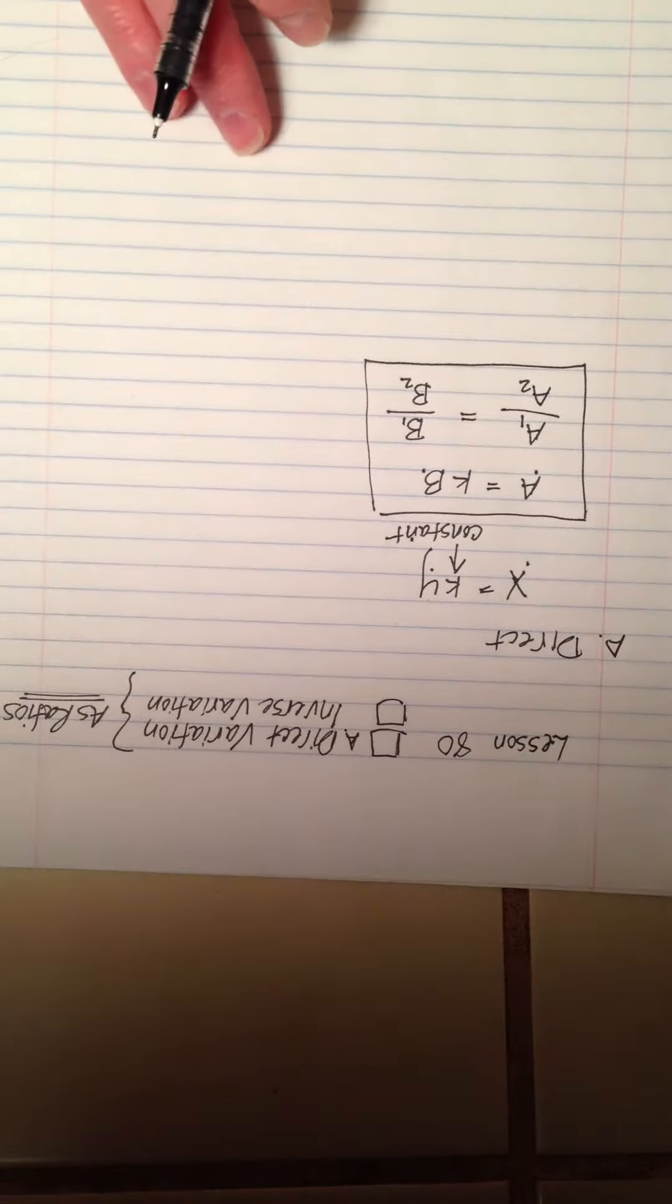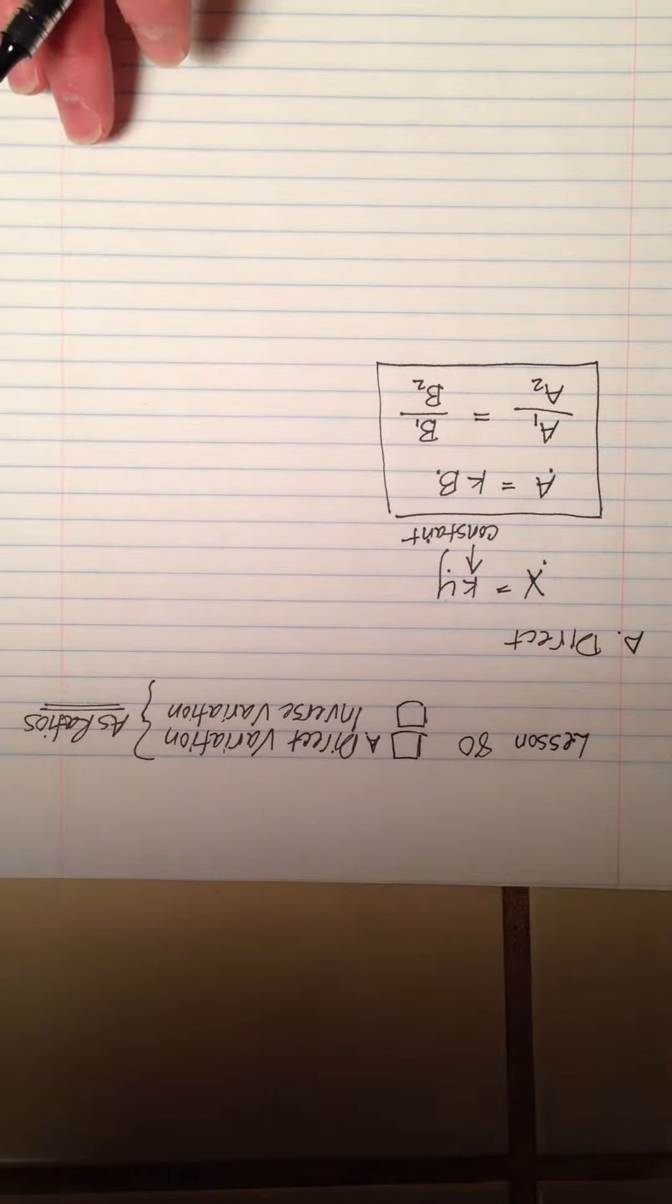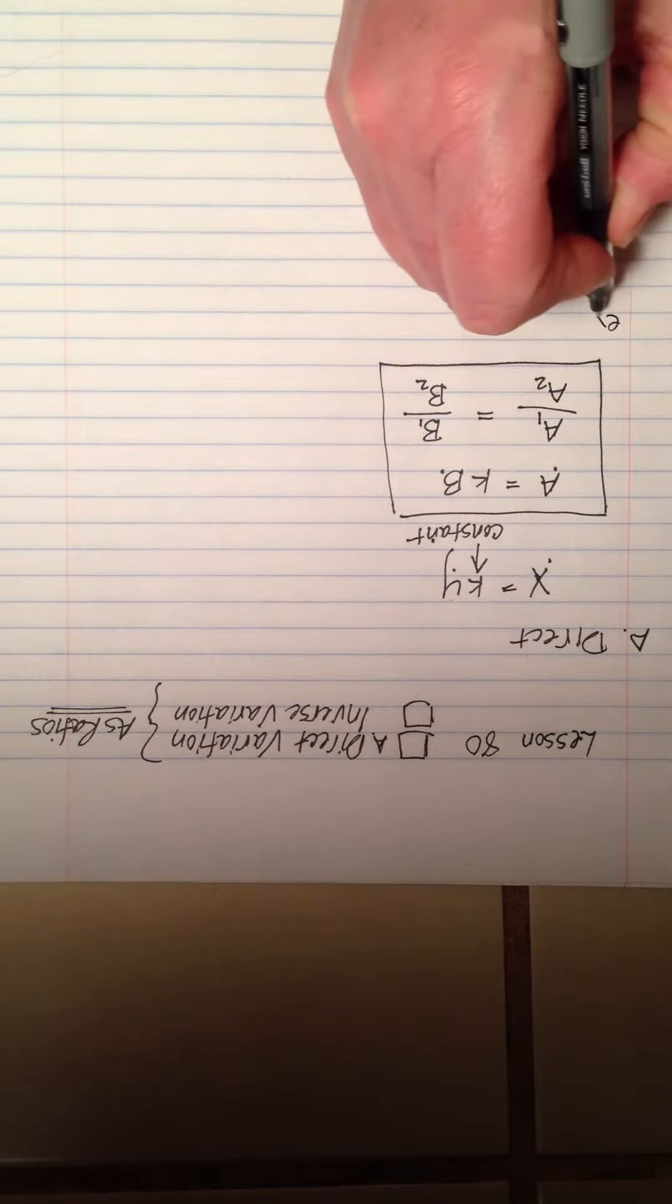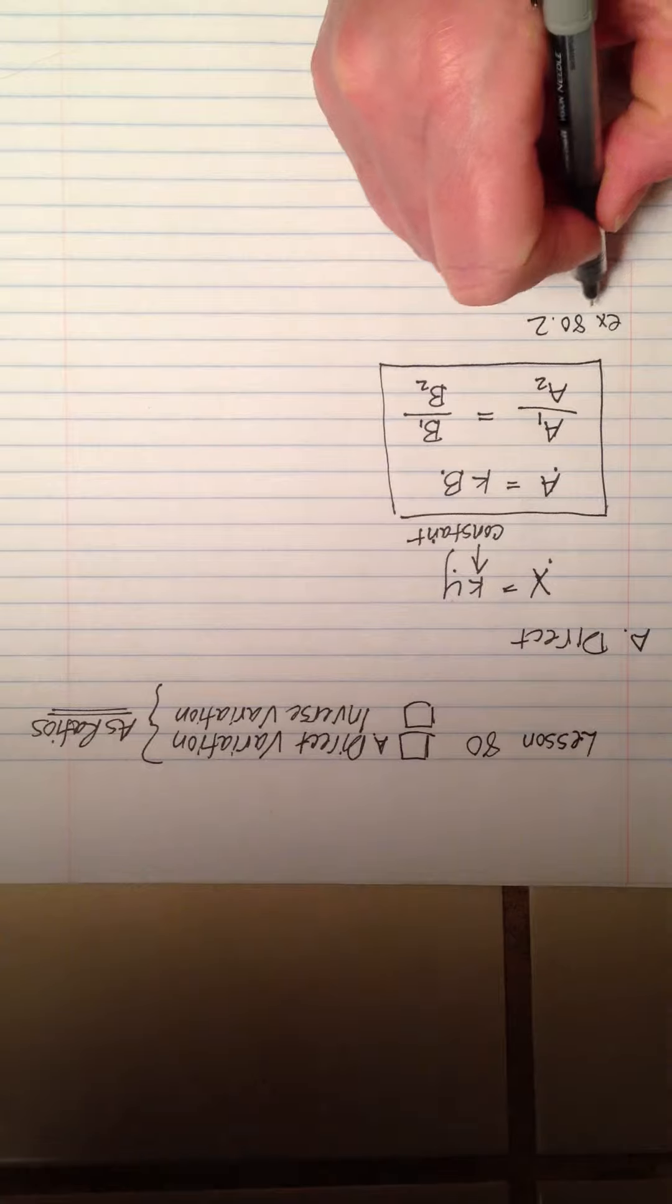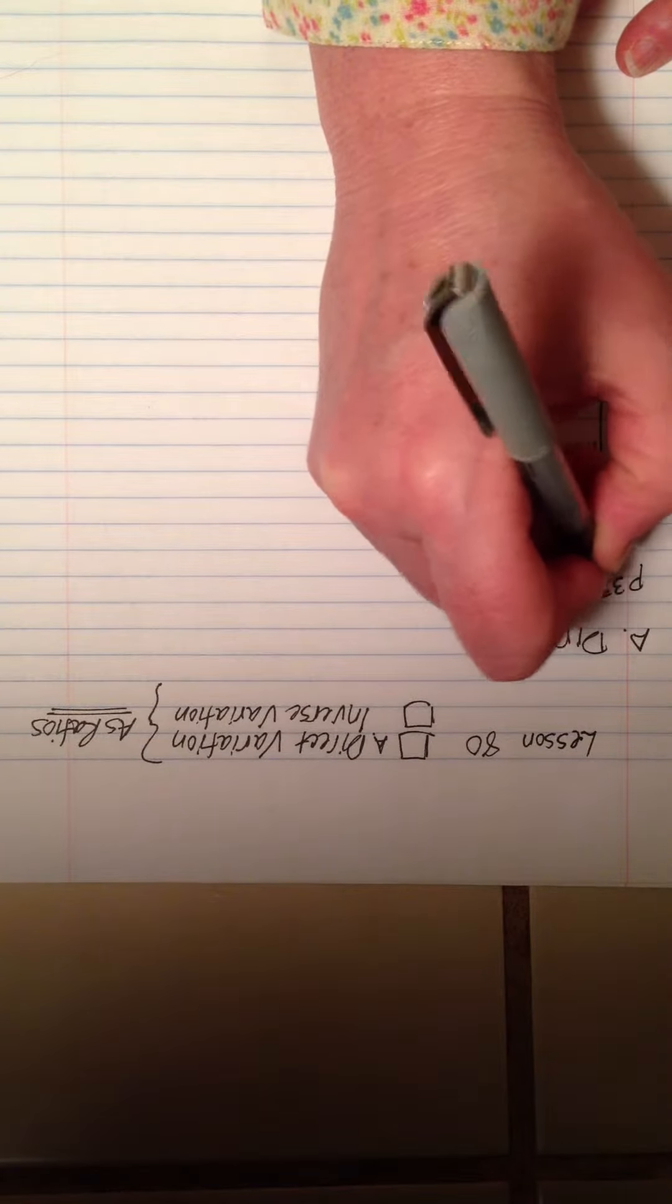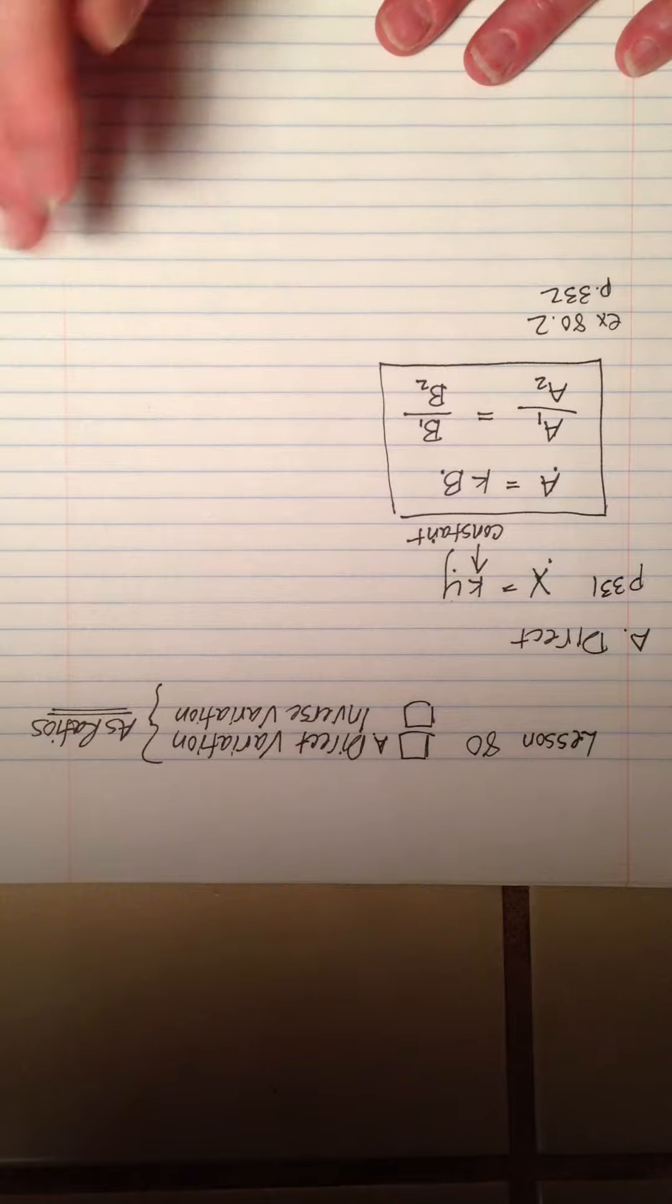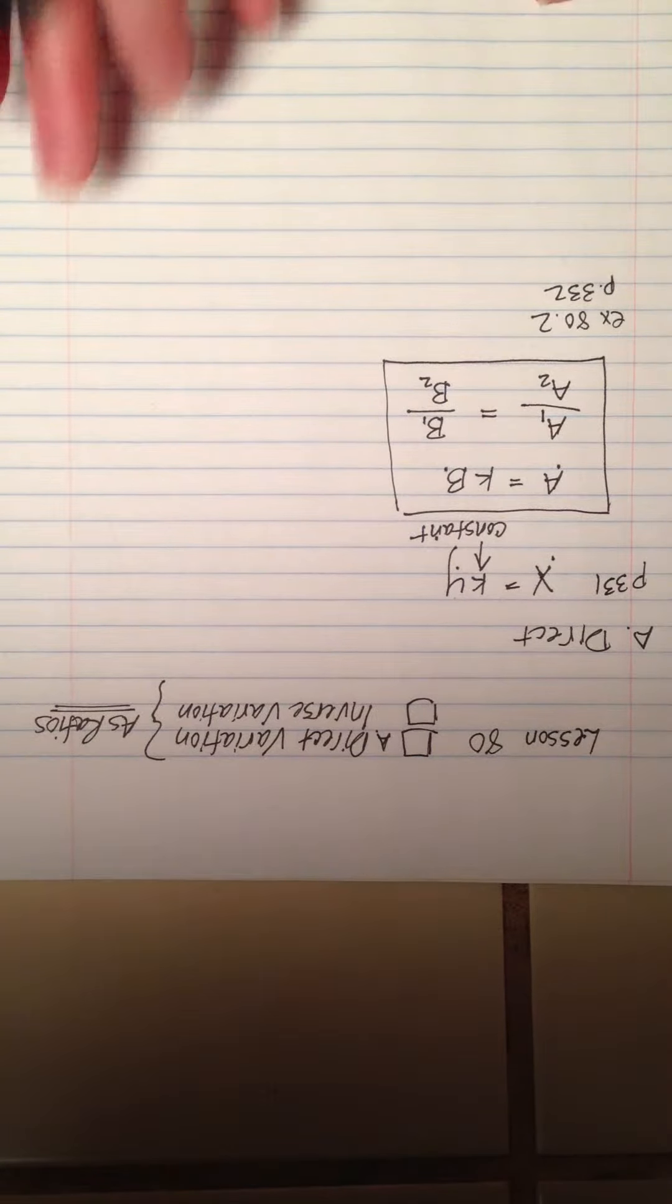The variable before the change over the same variable after the change will be in proportion to the second variable before the change and the second variable after the change. These two approaches will get you the very same answer. We've already practiced this, so now we're going to practice this style. One's not better than the other, we're just prepping you for whatever science teacher you might have. Let's look at example 80.2. I am on page 332.